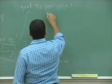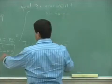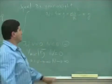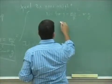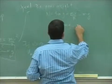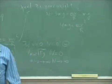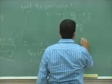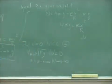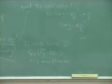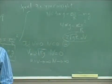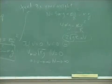Feel three times your weight — put N equals 3mg into that formula. The mg goes over to give 4mg. So 3mg plus mg is 4mg, and then V equals the square root of that, so that's going to be 2 times the square root of gr. If the velocity equals that, then you feel three times your weight at the top.